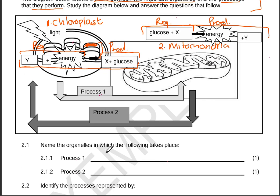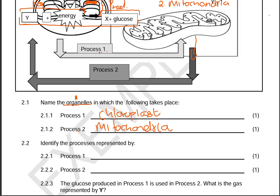Question 2.2.1 asks us to name the organelles in which processes one and two take place. This can be easily confused — it is not asking you to identify the processes, but to name the organelles. Process one takes place within the chloroplast, and process two takes place in the mitochondria. Question 2.2.2 asks us to identify the processes: process one is photosynthesis and process two is cellular respiration.